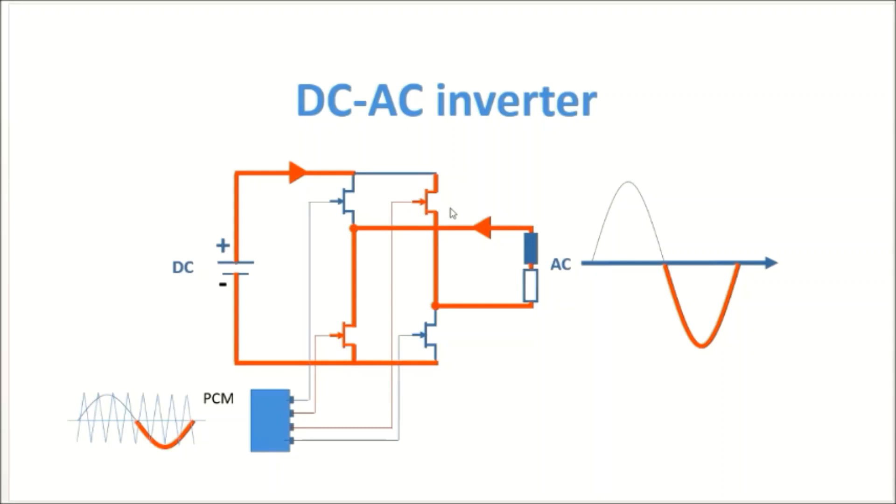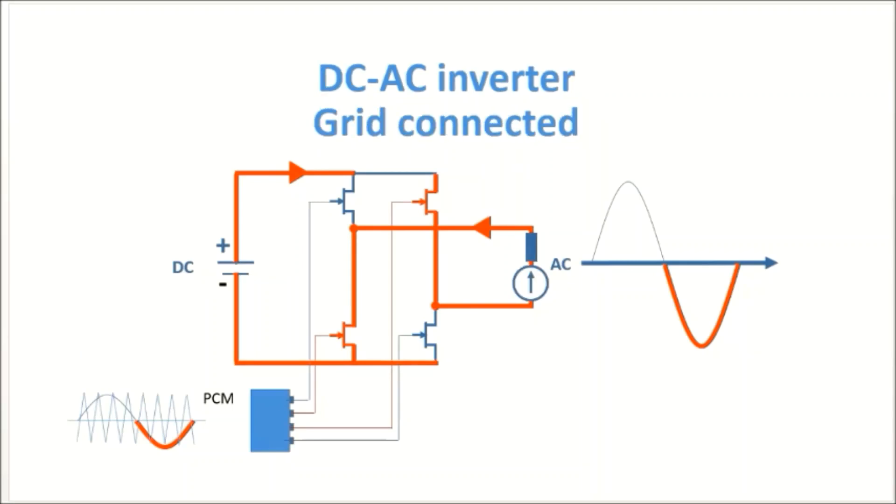The example was based on an entirely passive load, so there is only a resistor and an inductor. We replace this resistor and the inductor now by an active element, and this active element could be a grid, so we could connect this inverter to the grid, but it could be as well a motor or a generator.